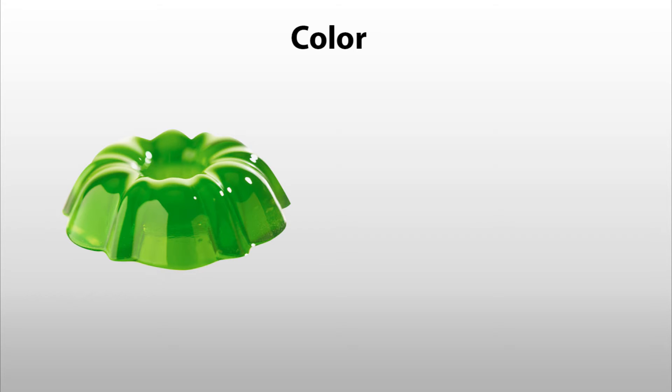Actually, this jello is absorbing light in the red region of the spectrum. Likewise, orange juice does not absorb light in the orange region. It actually absorbs light in the blue region, allowing our eyes to see the orange light. And therefore, orange juice appears orange.